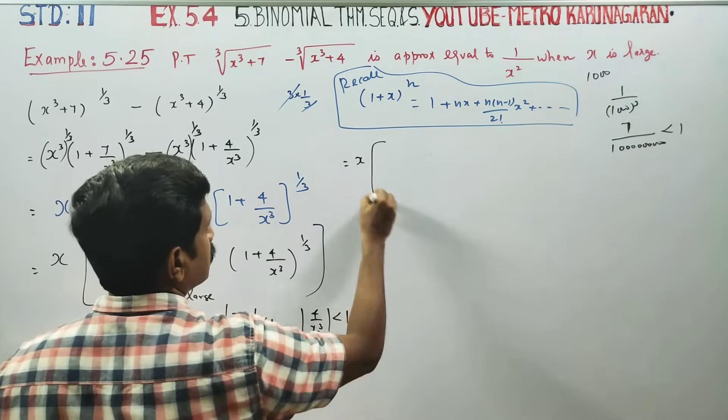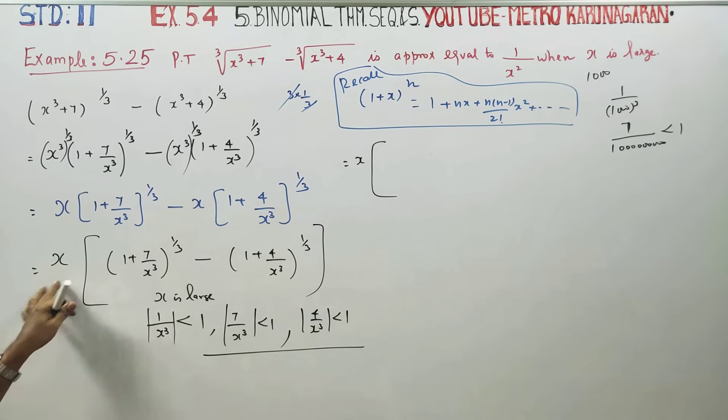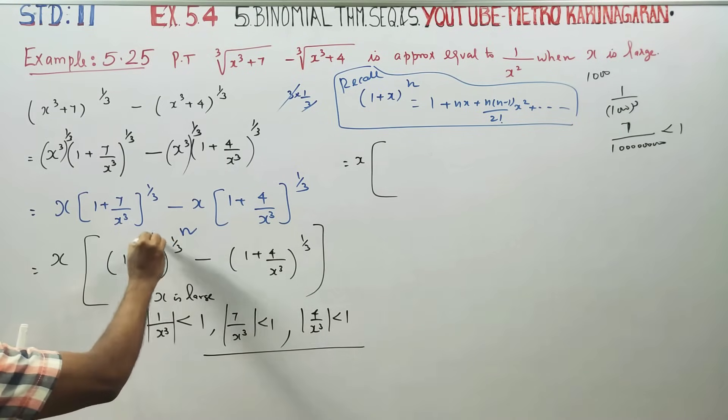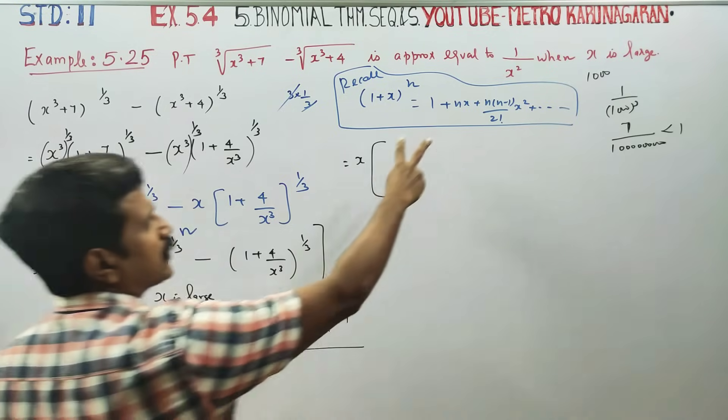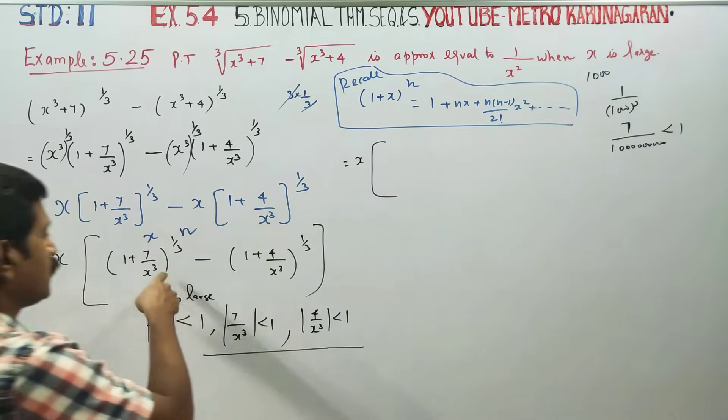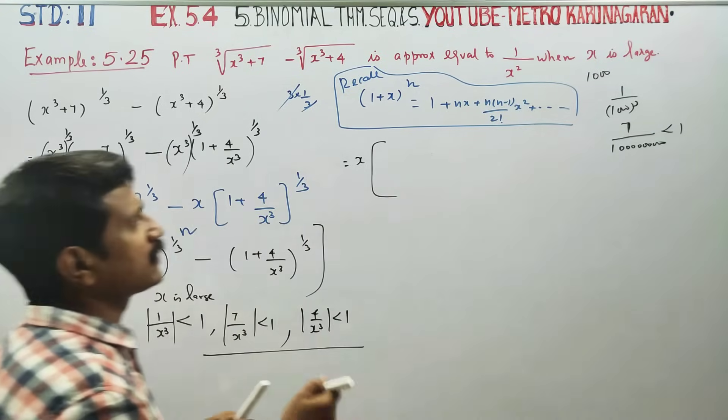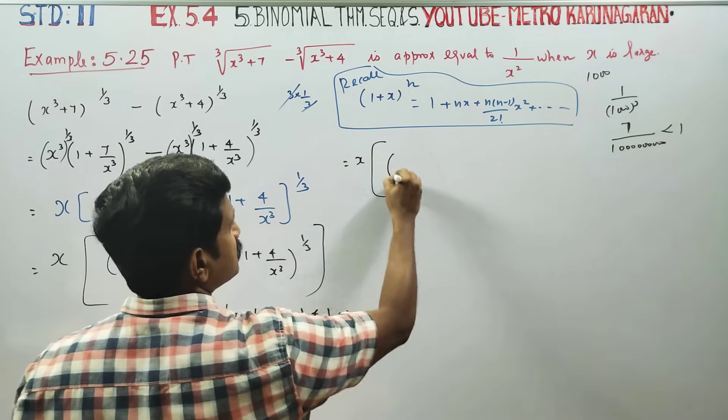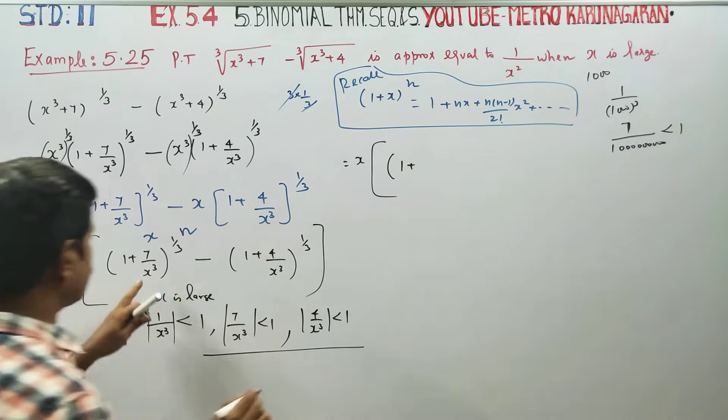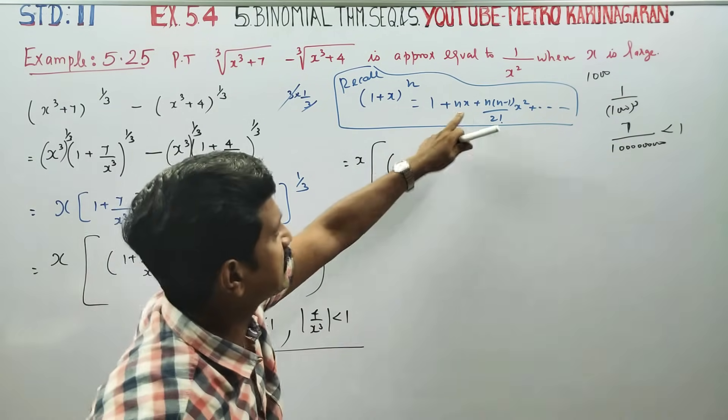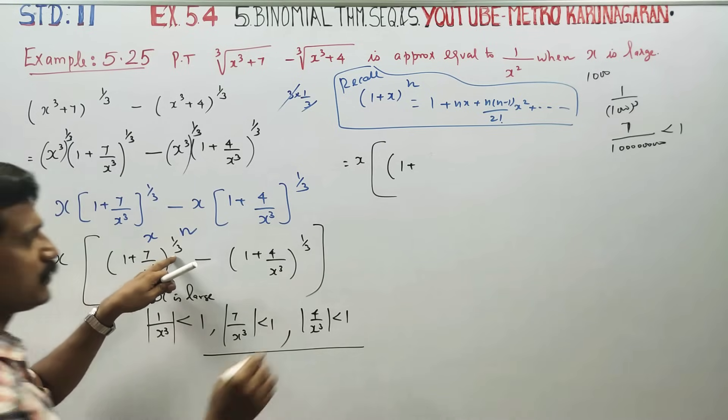In this form, n is 1/3 and x represents our expression in each bracket.